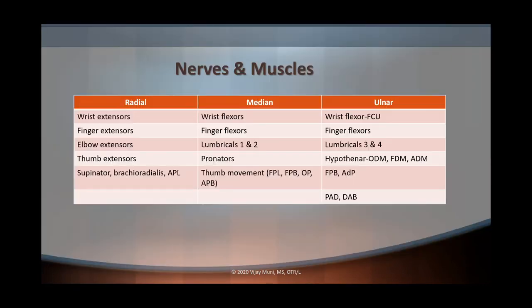For this video, I decided to break it down into the radial, median, and ulnar nerve. And each nerve, I talked about the different muscle groups involved. With your radial nerve, you can see your extensor muscles like your wrist extensors, finger extensors, elbow extensors, thumb extensors, as well as your supinator, brachioradialis, and abductor pollicis longus.